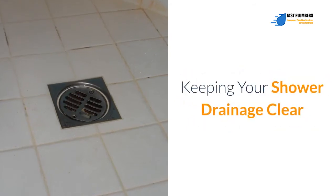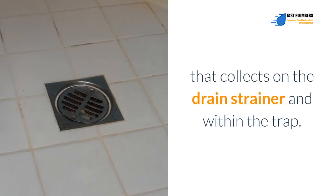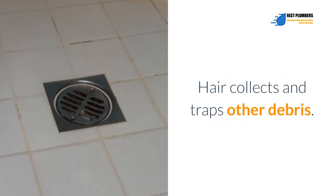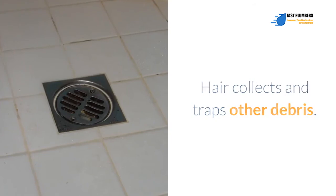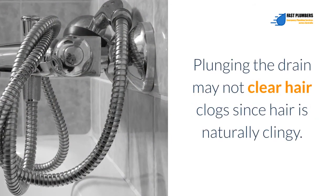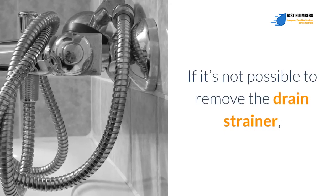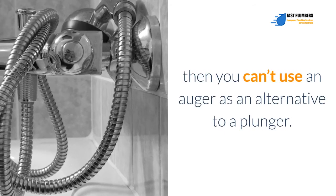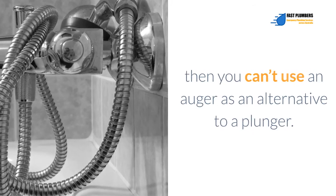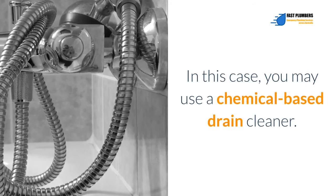Keeping Your Shower Drainage Clear. The shower drain can easily clog as a result of hair that collects on the drain strainer and within the trap. Hair collects and traps other debris. Plunging the drain may not clear hair clogs since hair is naturally clingy. If it's not possible to remove the drain strainer, then you can't use an auger as an alternative to a plunger.